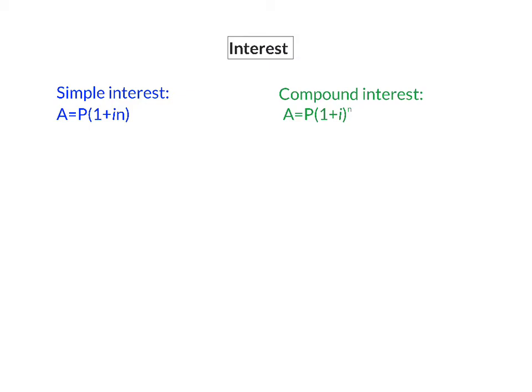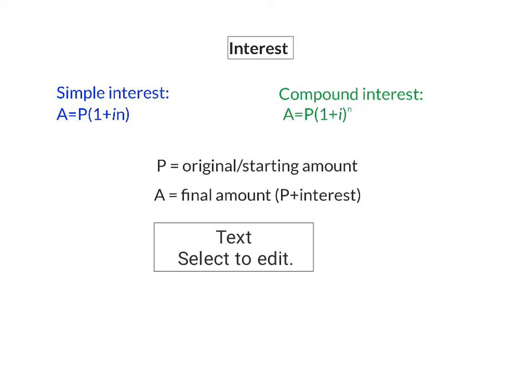The first one of these four variables will be the P-value and the P-value is for the original or starting amount of the account. Then you have your A-value and the A-value is your final amount. This value then consists of your original or starting amount as well as the interest that has been added. I is your interest rate divided by 100. Your interest rate will always be given as a percentage and you will have to divide it by 100 to write it in its decimal form.